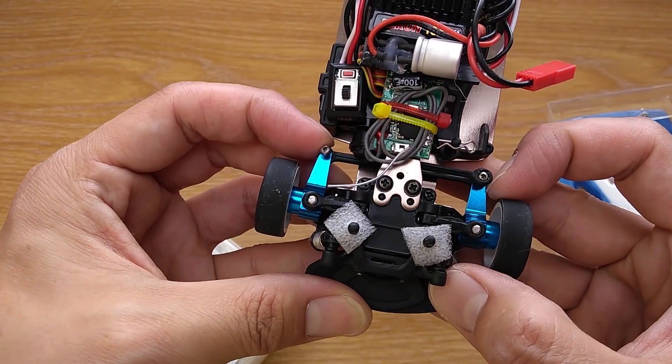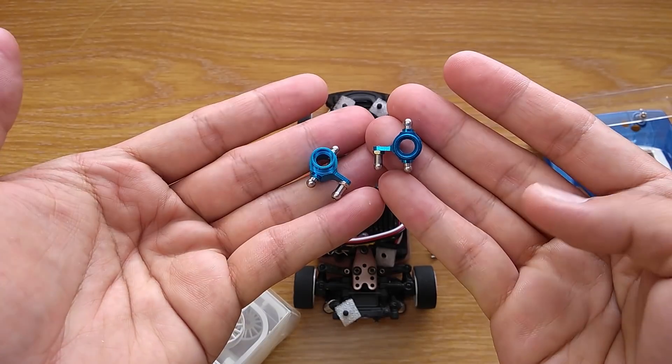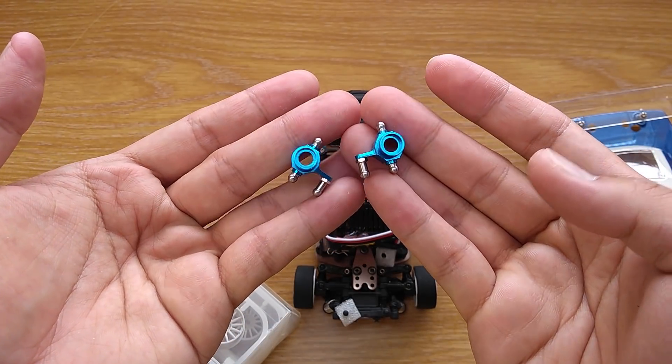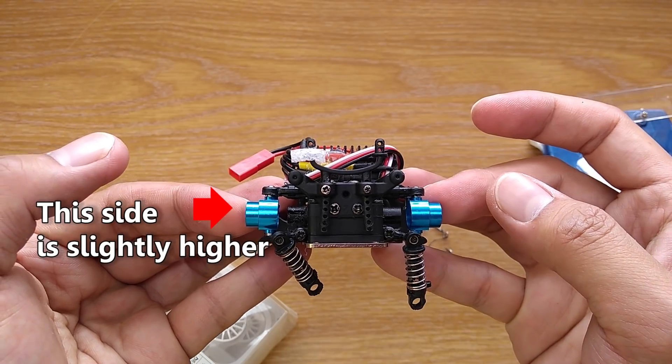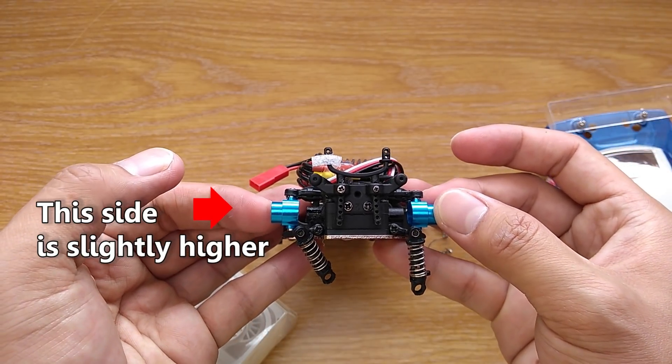Finally, I also upgraded the front knuckles to aluminium to make the steering a bit smoother. Unfortunately, the rear knuckles that I got don't work so well. The size is a bit off and they jam up the suspension so I'm not going to use them until I have time to fix.